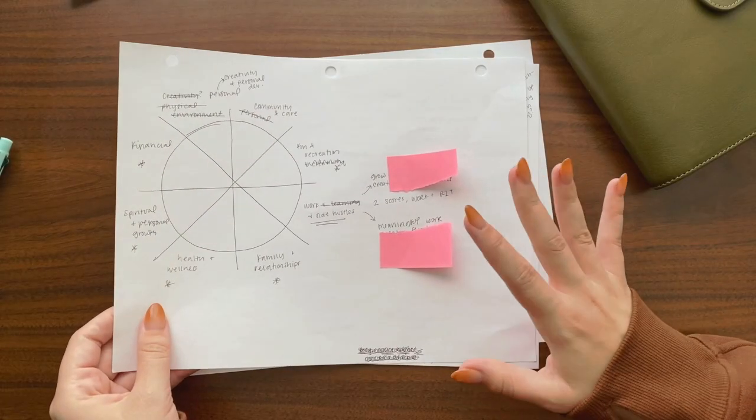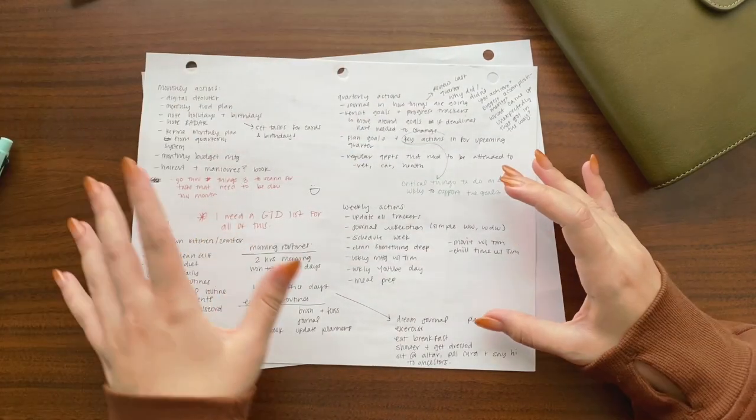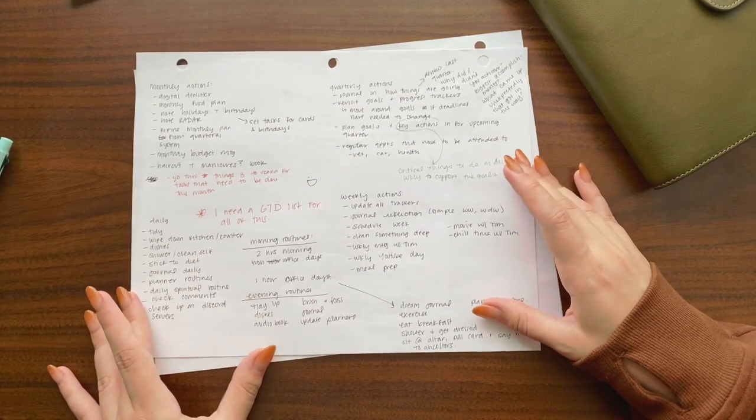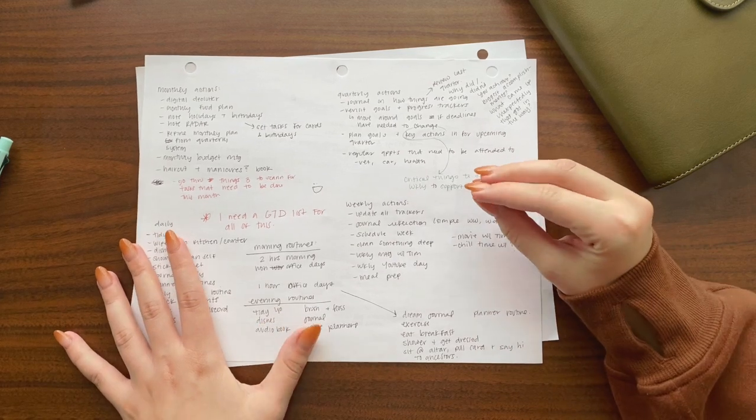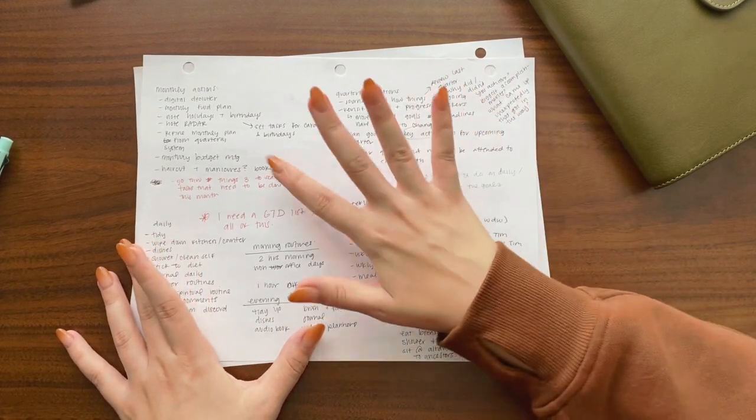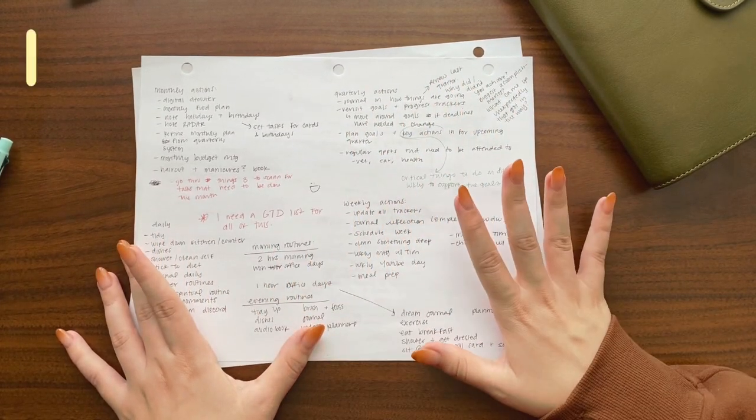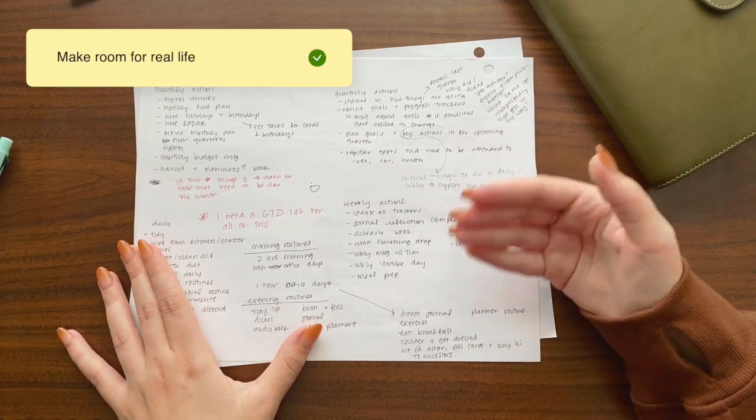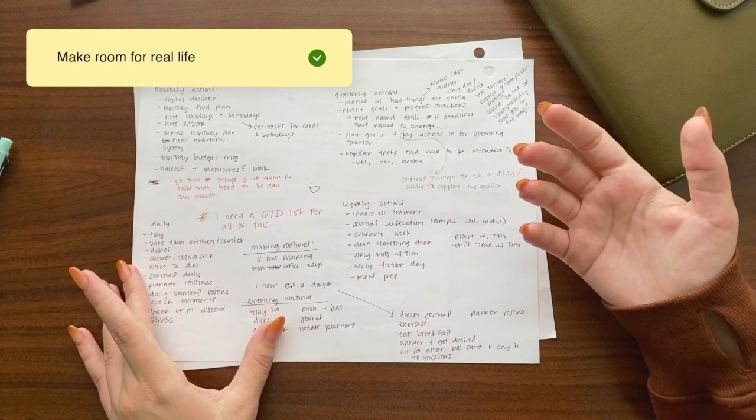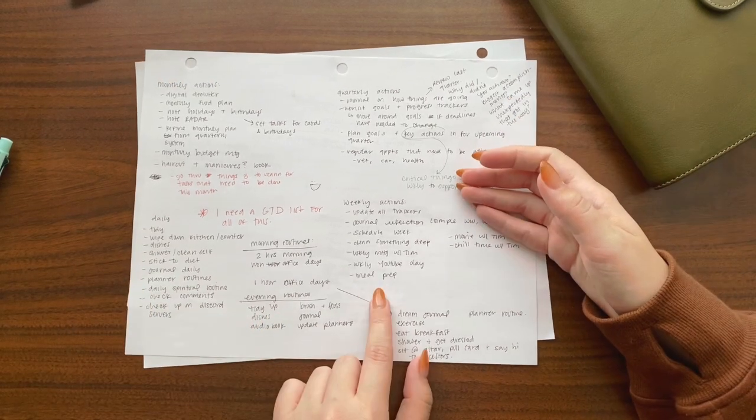So then what I did after was I made a list of all of the actions that I typically need to do to function as a human being on a quarterly, monthly, weekly, and daily basis. Now this includes things like budgeting. I need to budget every week, but it also includes things that I just need to live like meal prepping.